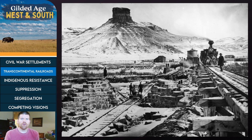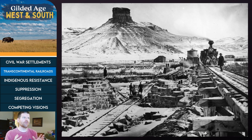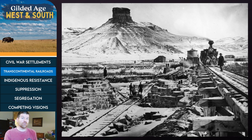One of the defining characteristics of the transformation of the West during this period is not only the federal sponsorship of westward expansion, but also the corporate sponsorship of westward expansion. One of the defining ways we can see that is through the completion of the Transcontinental Railroad.